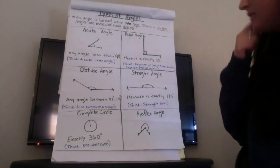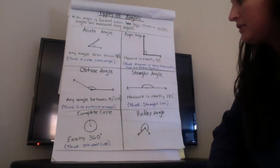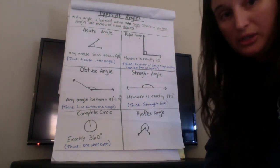And then we have a complete circle is exactly 360 degrees. So when you think of a complete circle, whole circle is a complete 360 degrees.